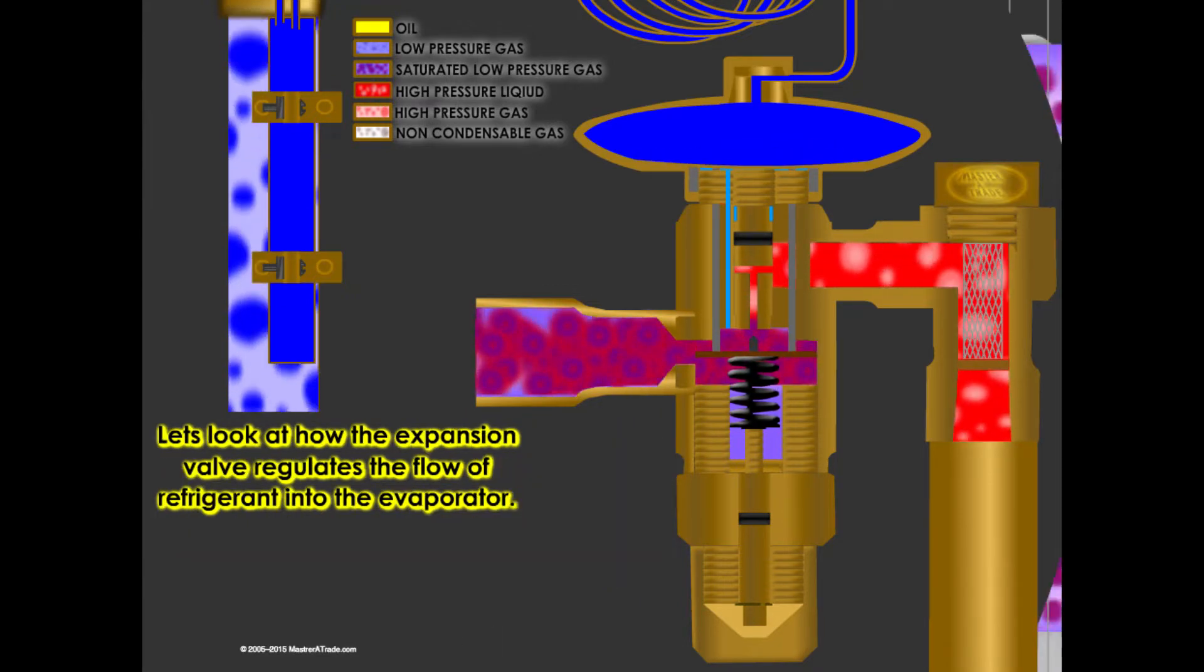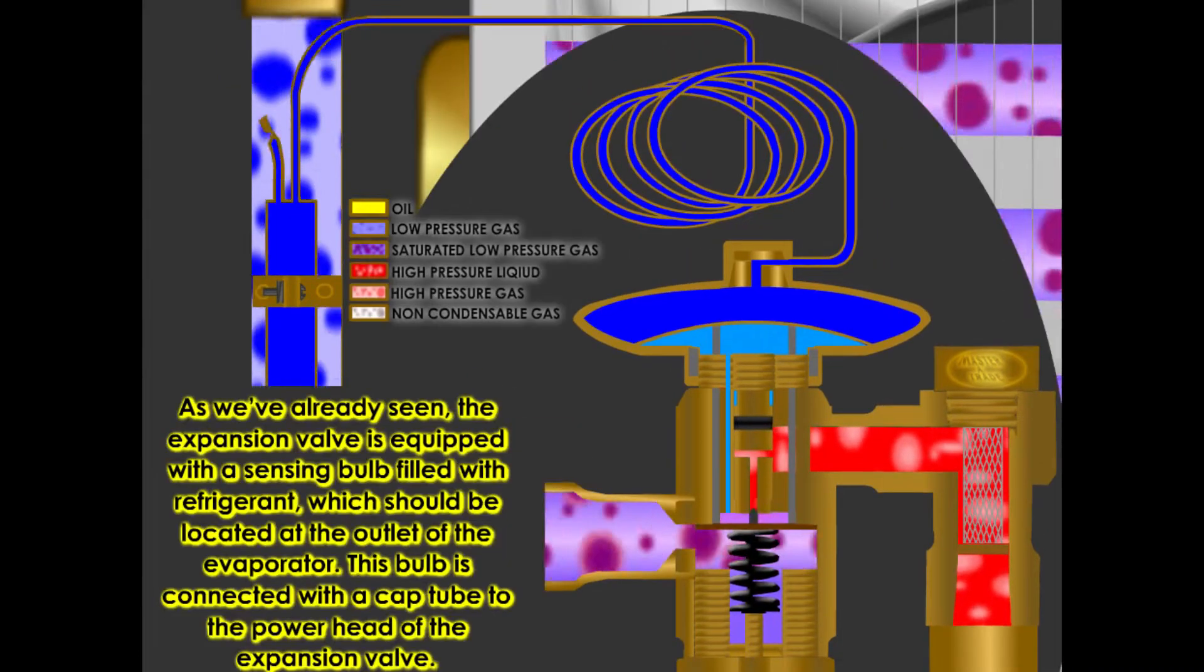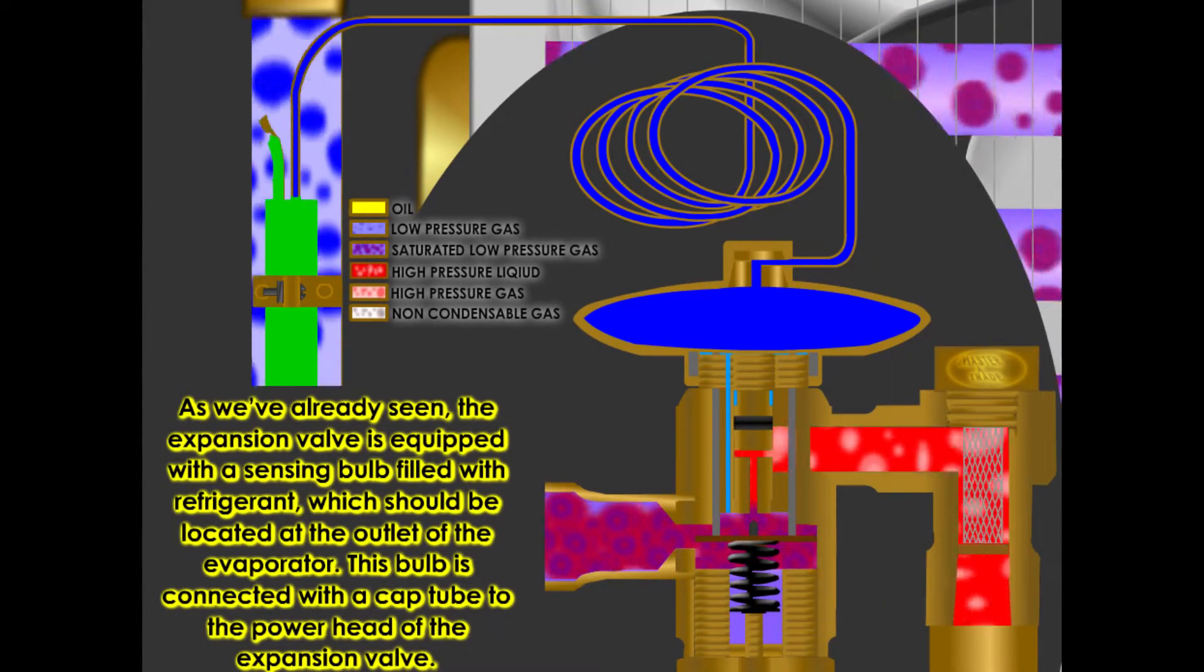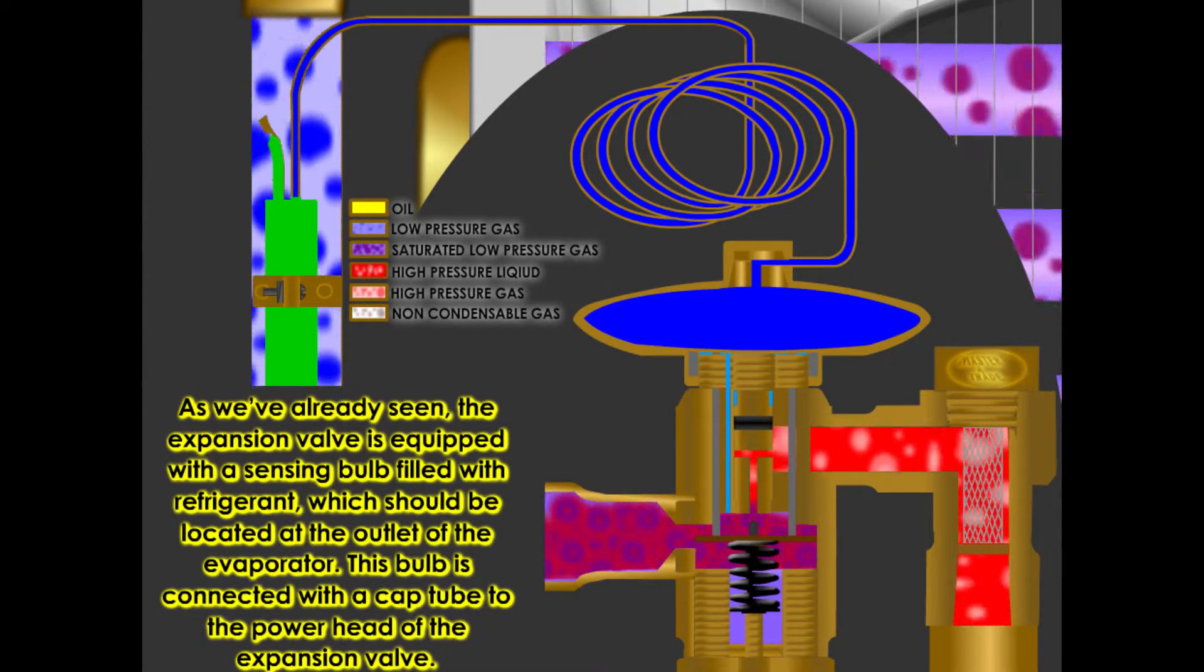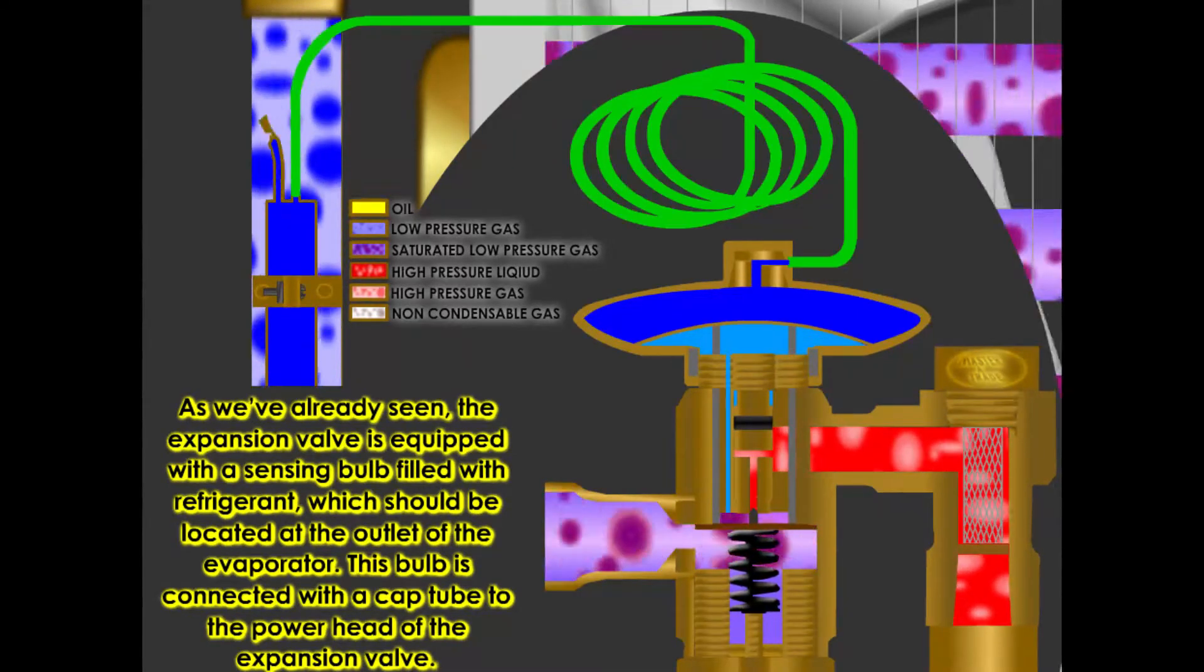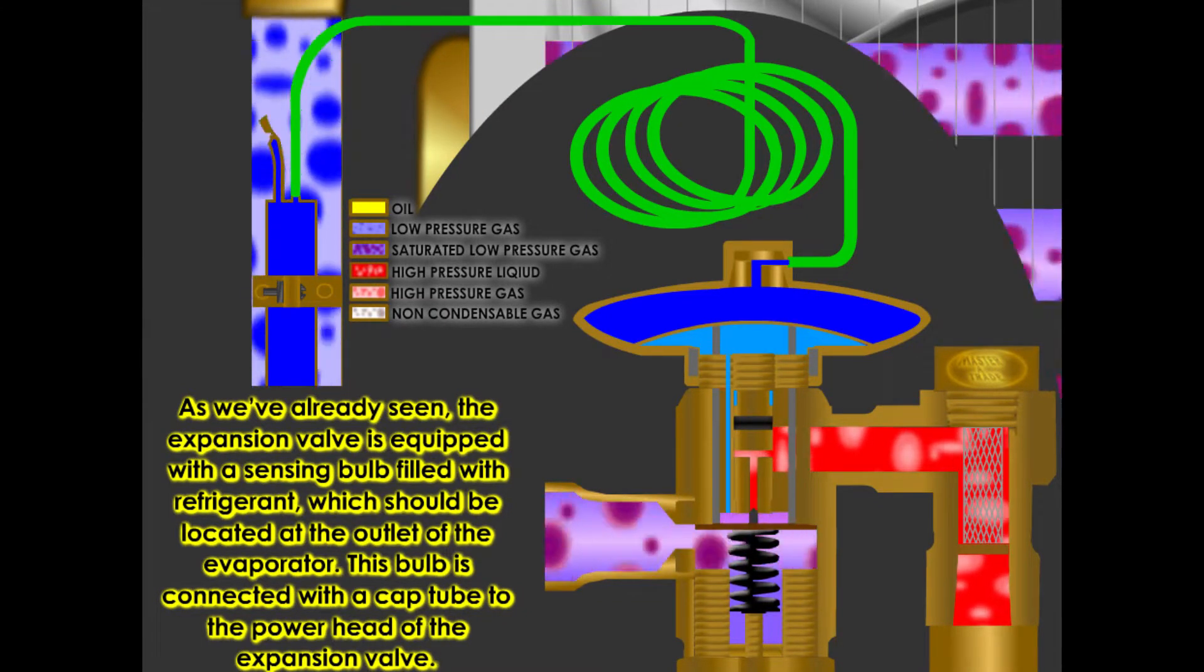Let's look at how the expansion valve regulates the flow of refrigerant into the evaporator. As we've already seen, the expansion valve is equipped with a sensing bulb filled with refrigerant, which should be located at the outlet of the evaporator. This bulb is connected with a cap tube to the power head of the expansion valve.